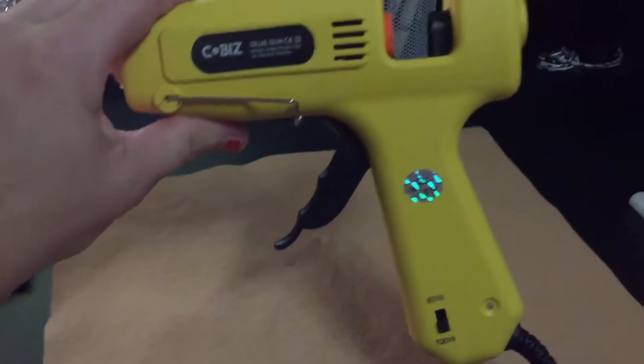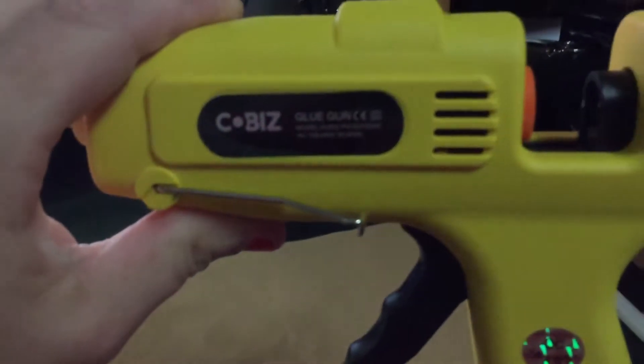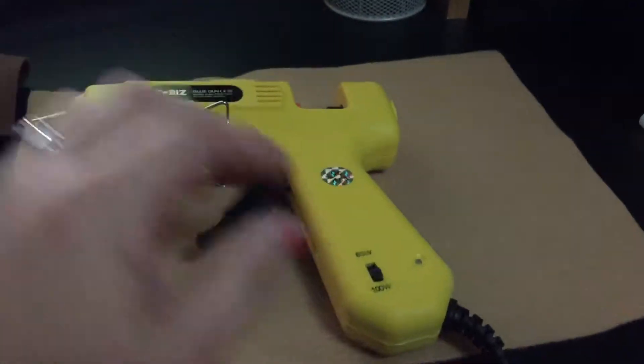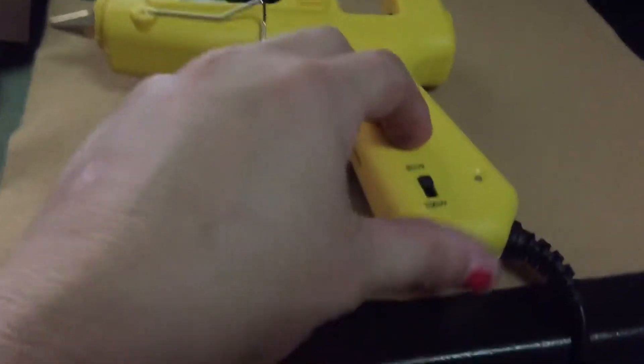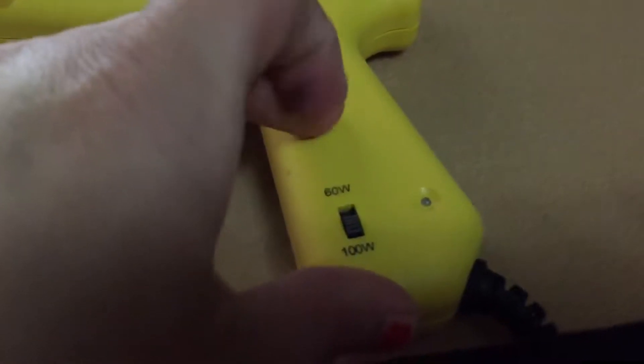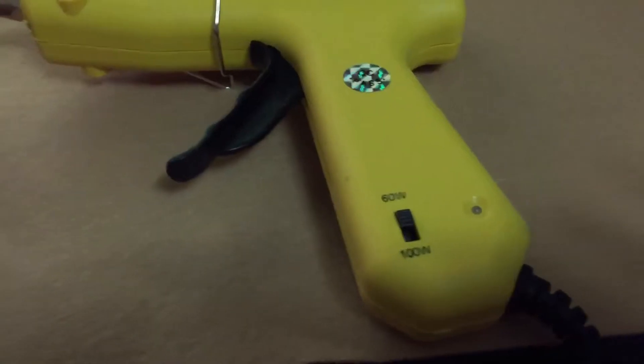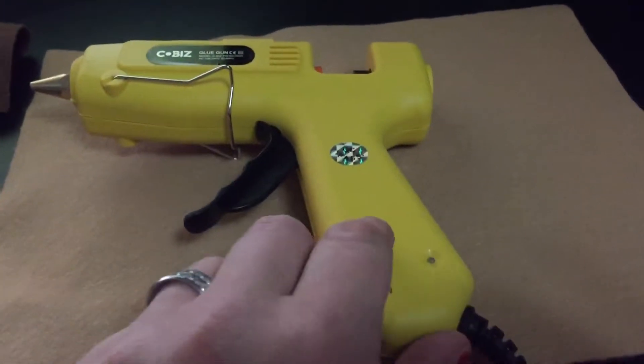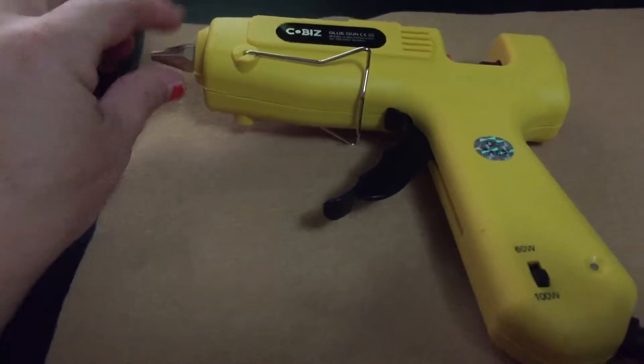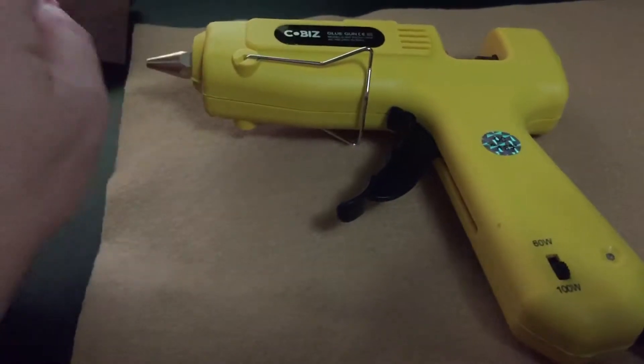This is the Cobus glue gun. It comes with two heat settings: 60 watt and 100 watt. The 60 watt setting gives you a little thicker glue when you're gluing. The 100 watt setting gives you a thinner glue that actually adheres a little bit better on certain fabrics.